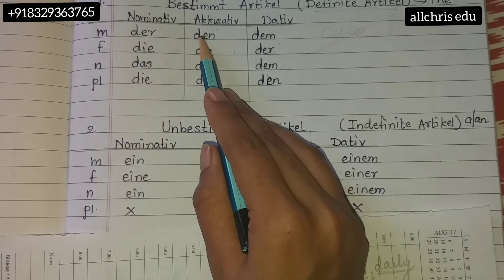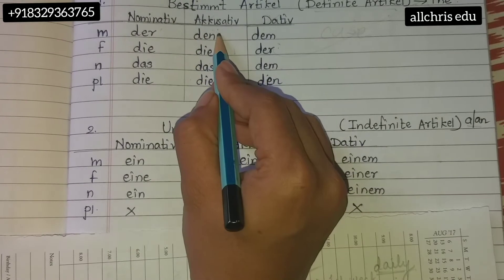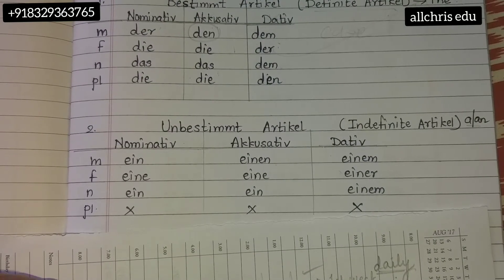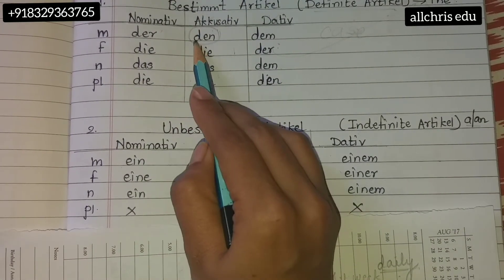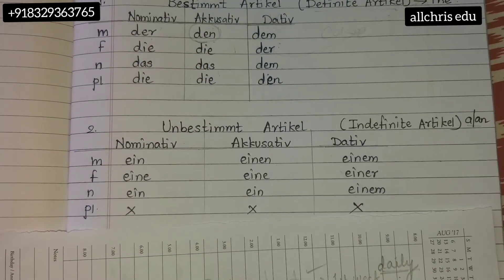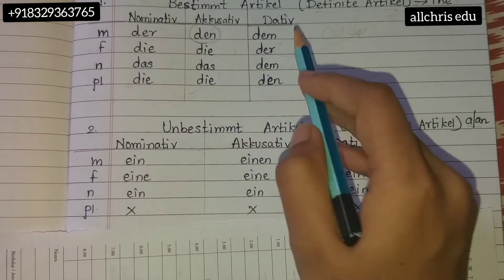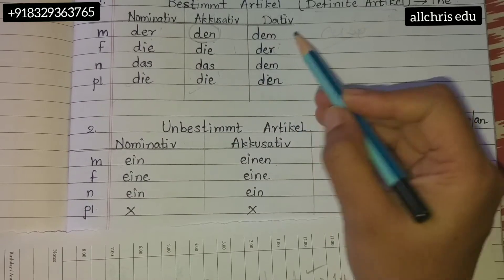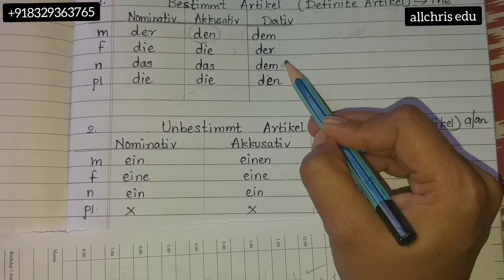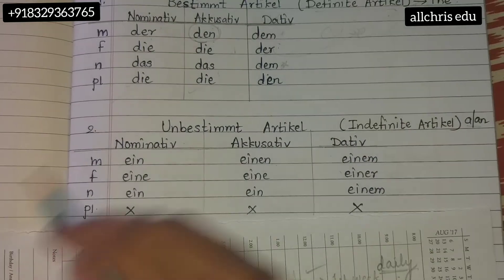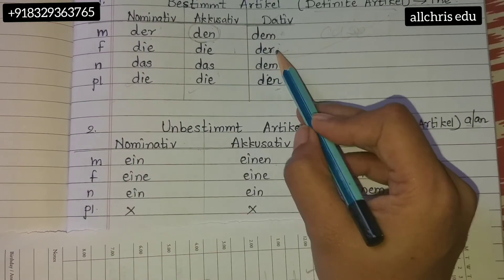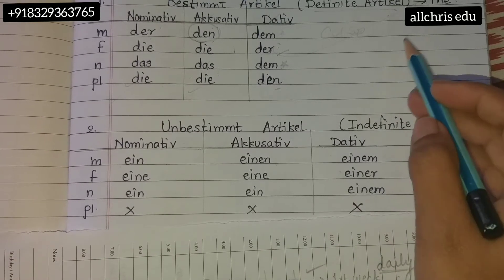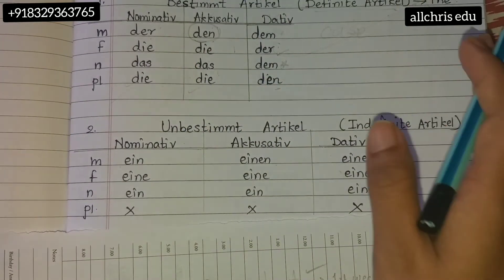In the second column, if you compare it to the first, there is only a minor difference — highlight this with a red color pen. The two columns are the same; only one word changes: 'r' changes into 'n.' Then comes the third column. In the dative column, male and neutral articles are the same. Learn it completely.